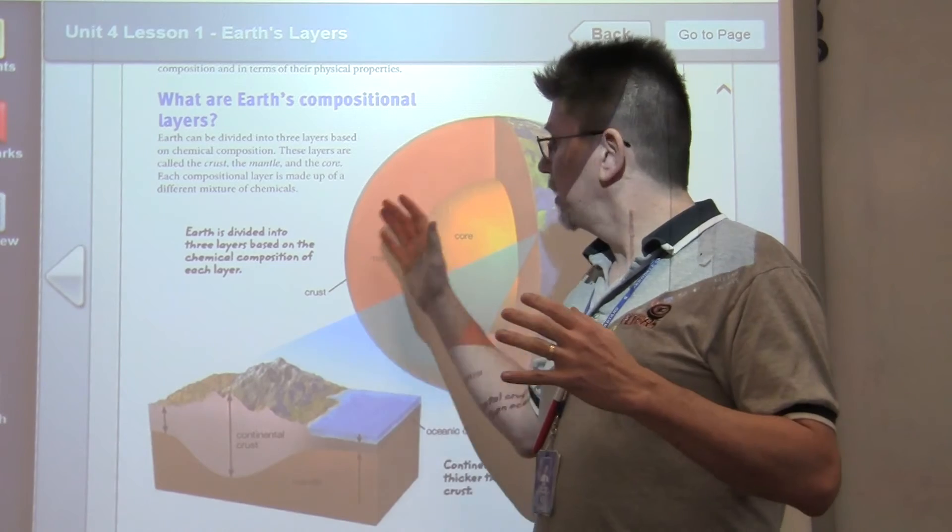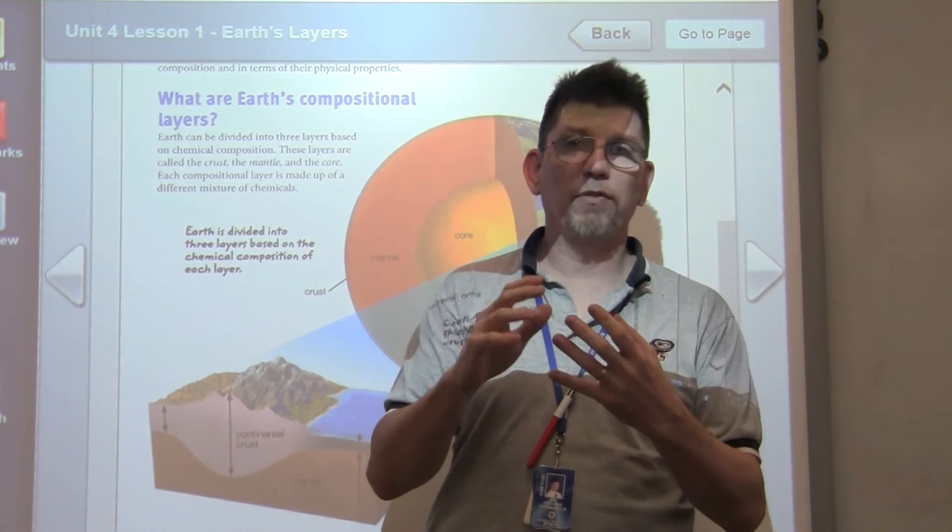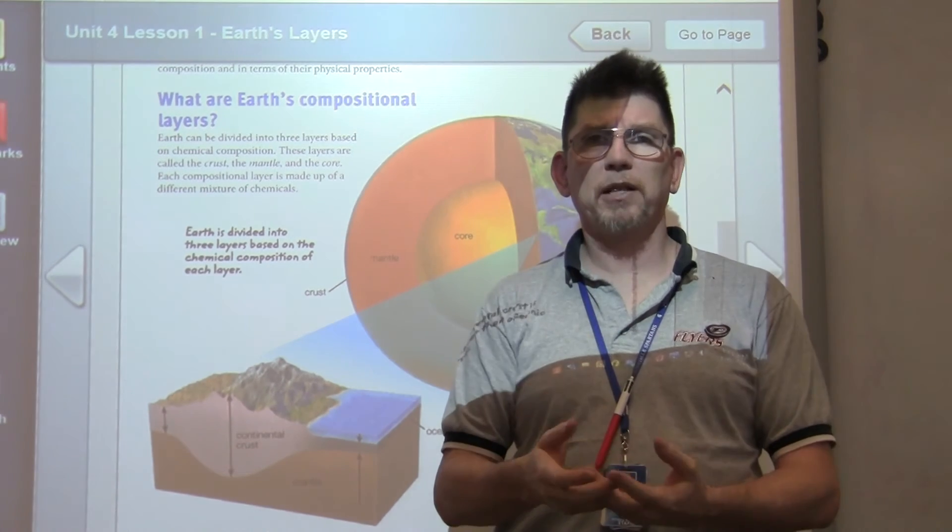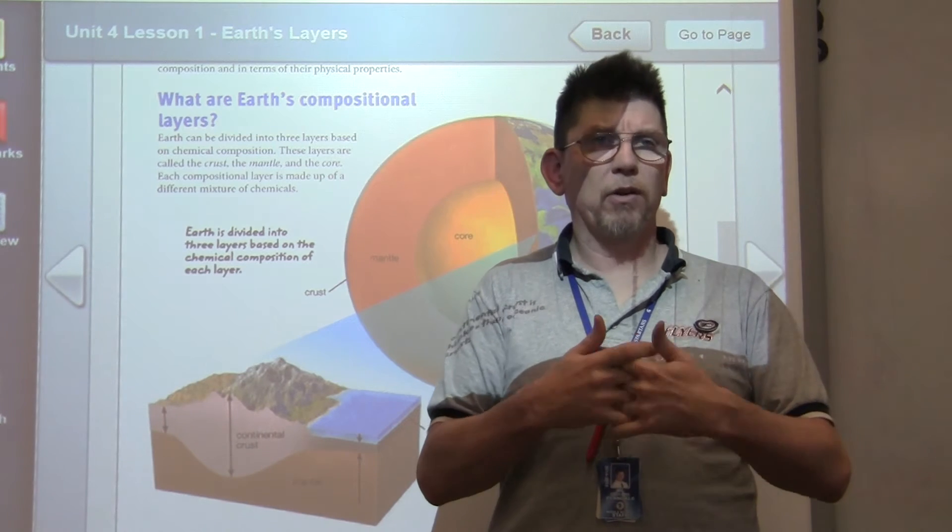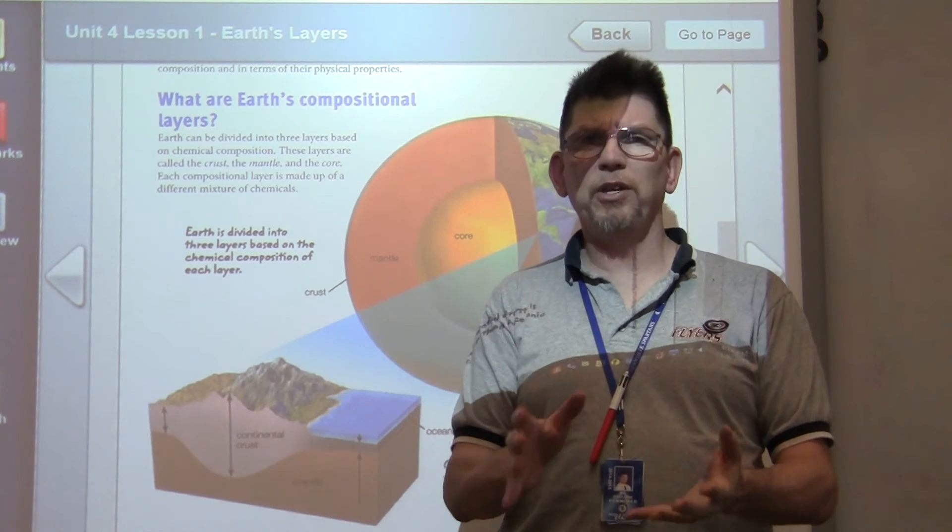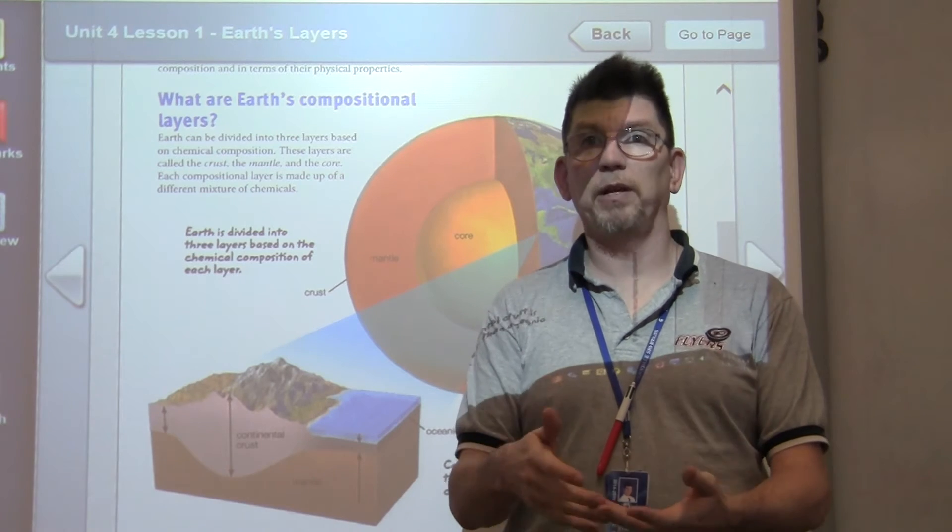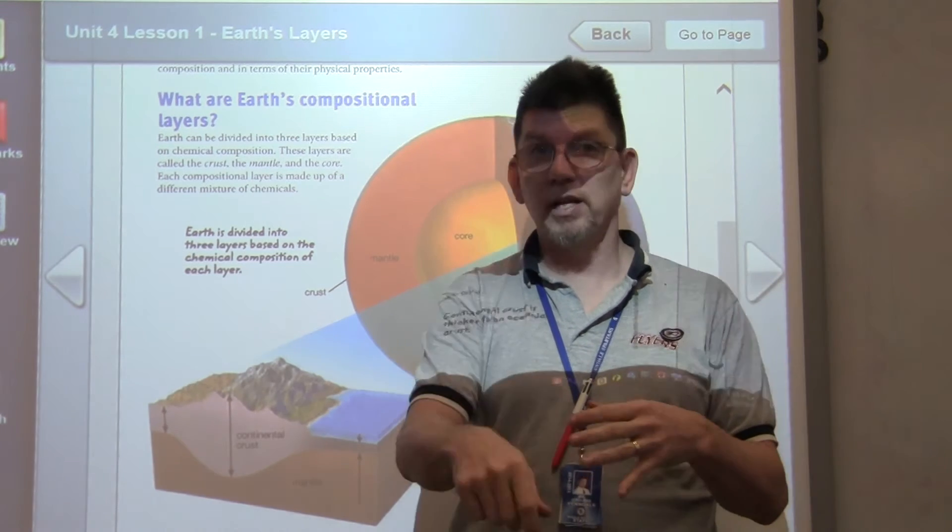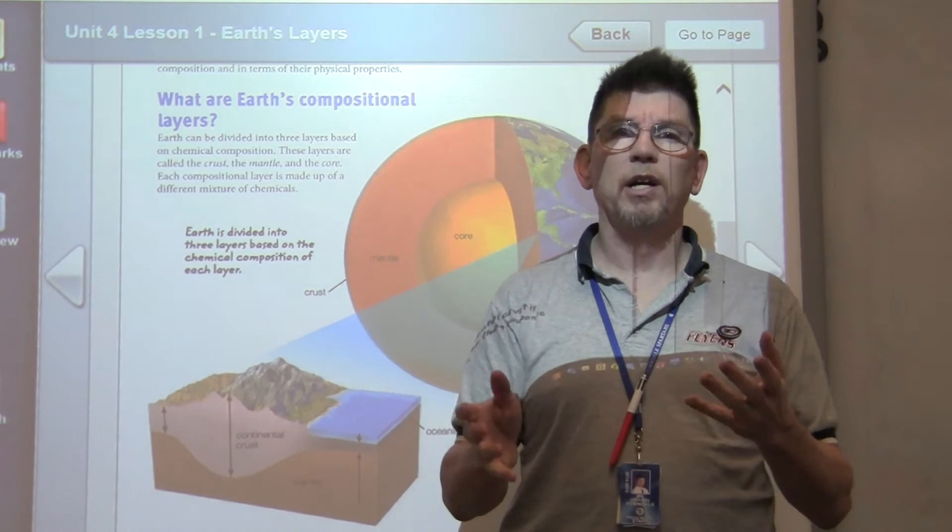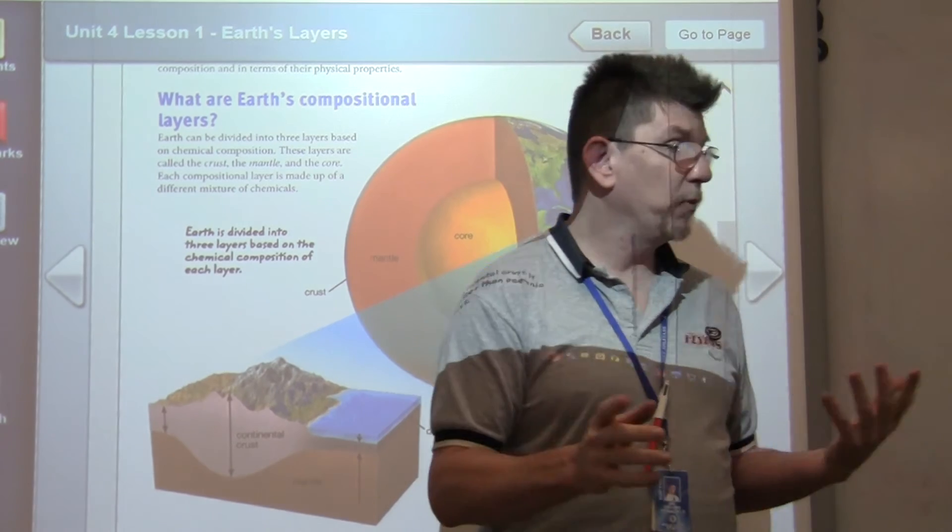Now that we've done the three compositional layers, kind of like what components make them up, we want to talk about how do we know what we know? How do we know what's down there? We've never been through the crust. We've never gotten down there and stuck a thermometer down there or tested what was down there. How do we know what we know?